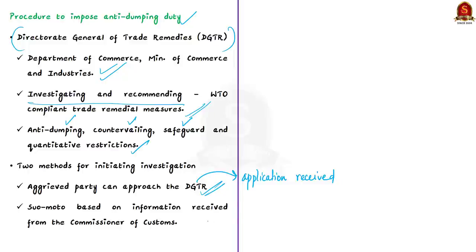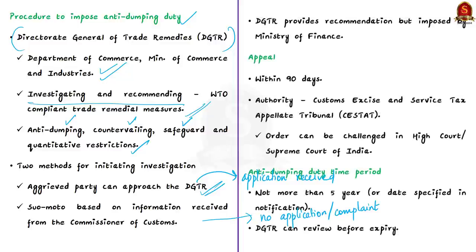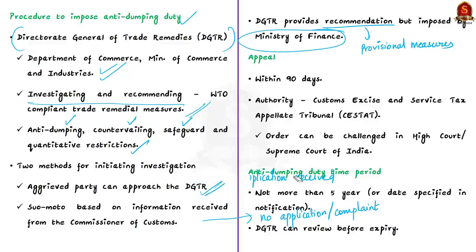Apart from this, the authority can also initiate suo moto action. Suo moto initiation of trade remedies investigation is done on the basis of information received from the Commissioner of Customs appointed under the Customs Act, or from any other source. In such circumstances, the authority initiates trade remedy investigation on its own without any complaint or application. The directorate provides provisional measures after investigation, but it is the Ministry of Finance which acts upon these recommendations and finally imposes or levies the duty.